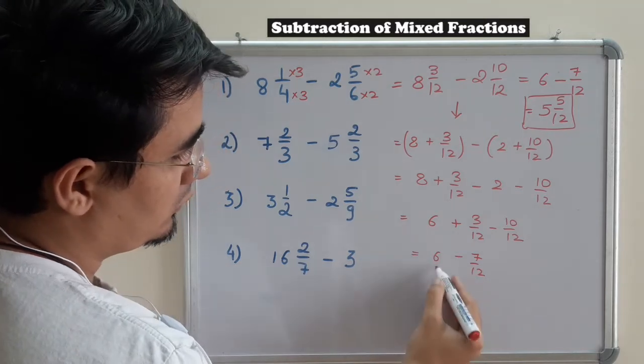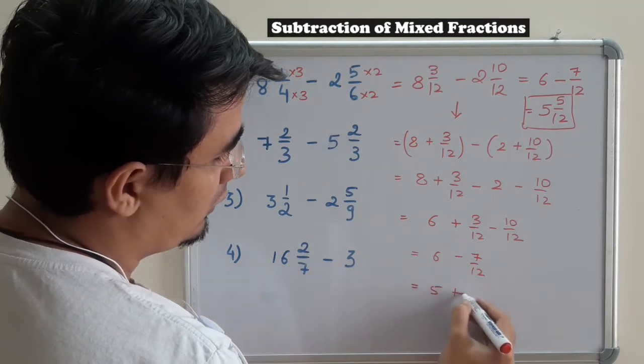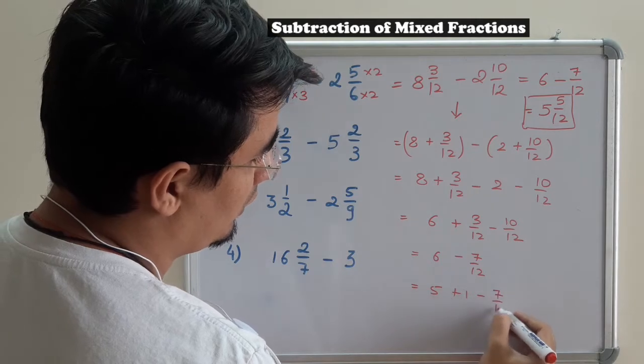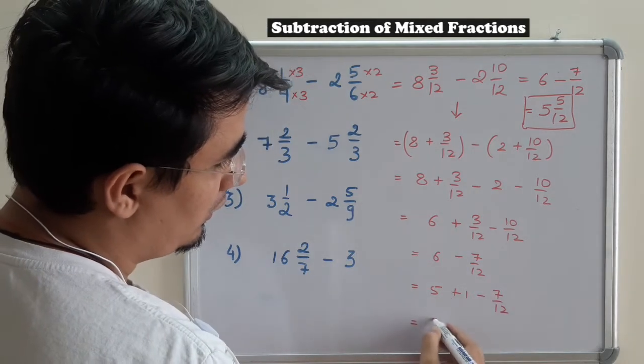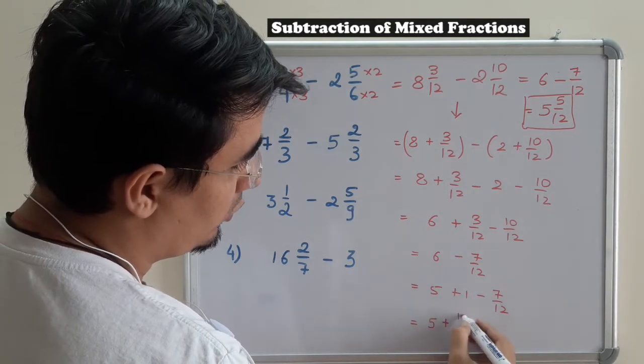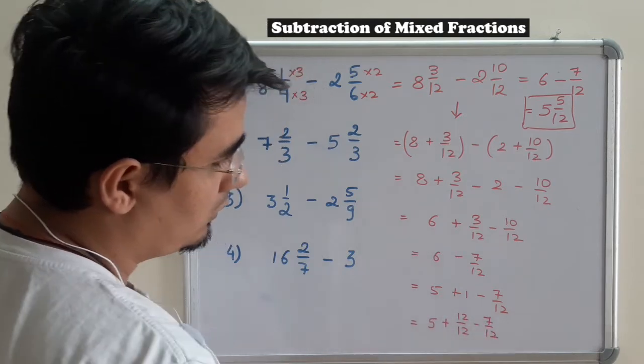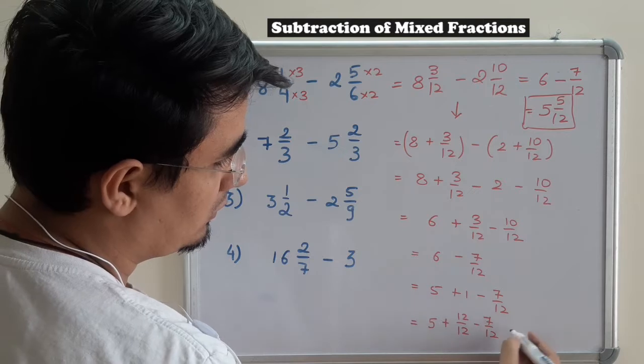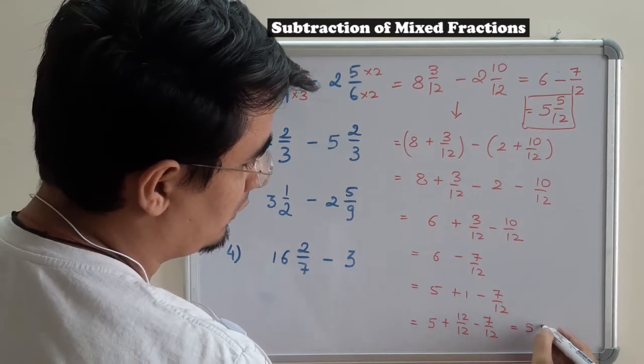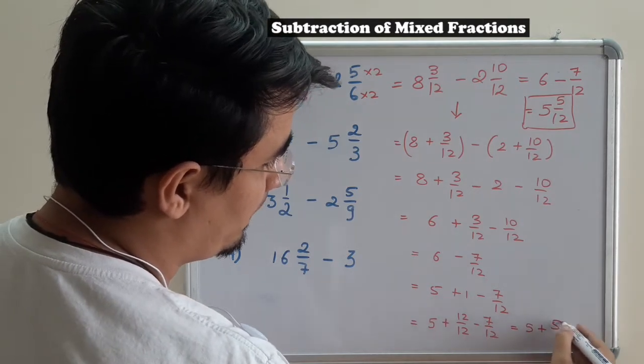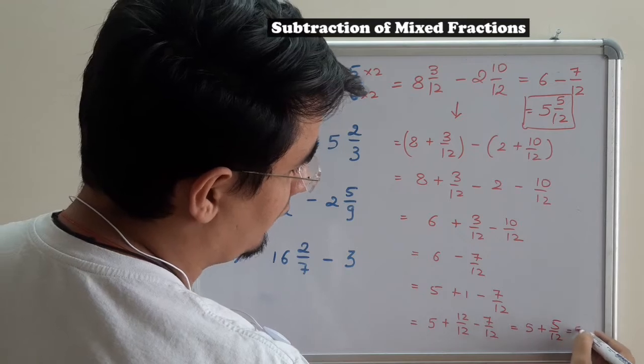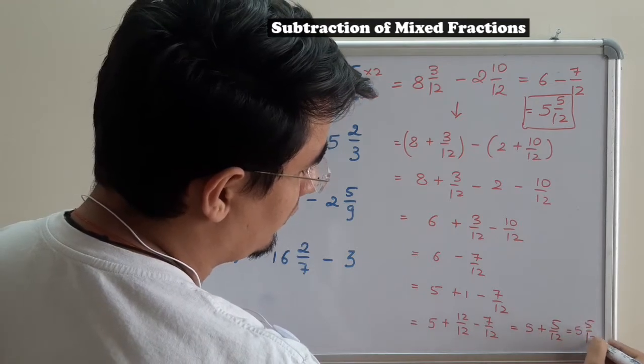Now 6 can be written as 5 plus 1 minus 7/12, and 1 can be written as 12 upon 12 minus 7/12. So 12 minus 7 is 5, 5/12. So 5 5/12.